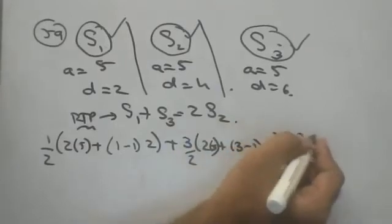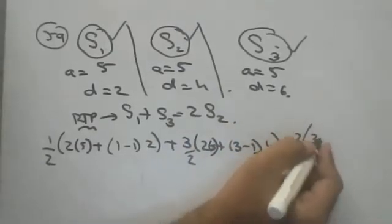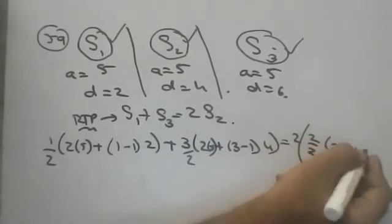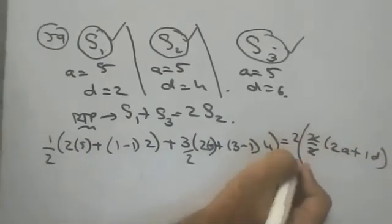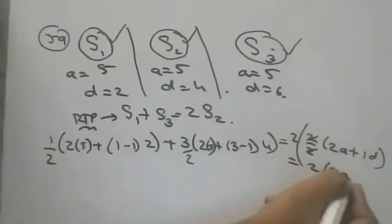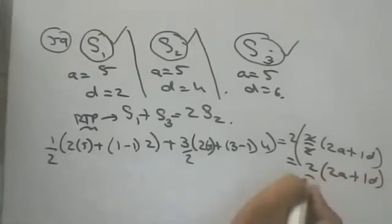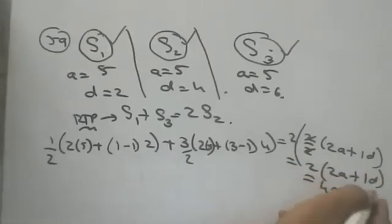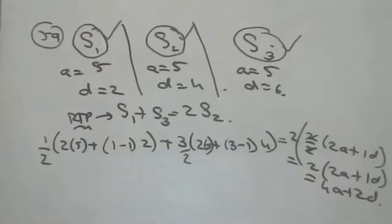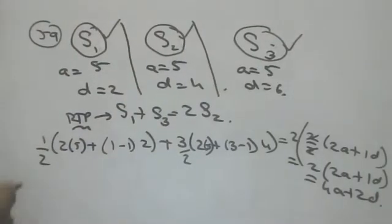And RHS: 2 into S2. S2 means n/2 into 2A plus 2 minus 1, that is 2 into 2A plus 1D, that is 4A plus 2D, that's RHS. LHS also if you solve you should get 4A plus 2D. Let's see.